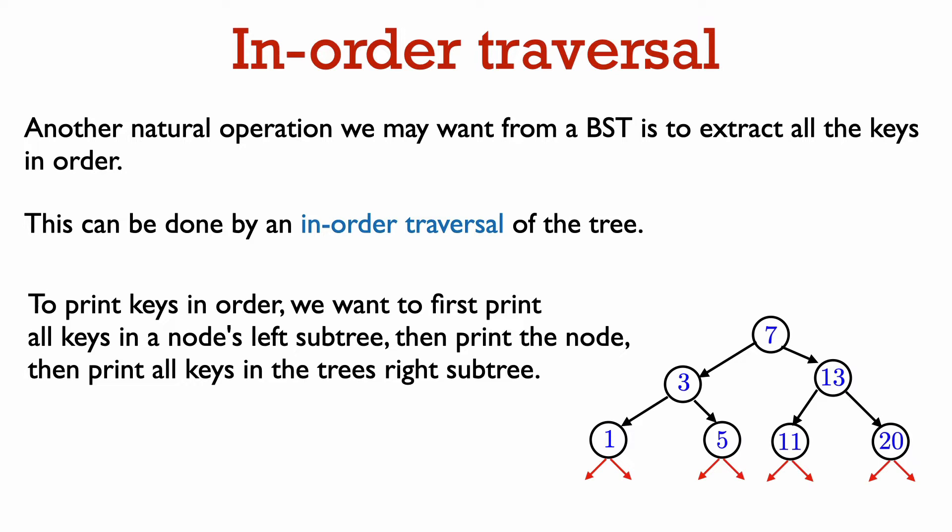Thus, to print out the keys in order from smallest to largest, we want to print out all the keys in the subtree of the left child of the root before we print out the root. Once we print out all the keys in the left subchild, then we want to print out the key of the root, and finally, print out the keys in the subtree of the right child of the root. This suggests a recursive procedure to print out the keys of the BST in order.